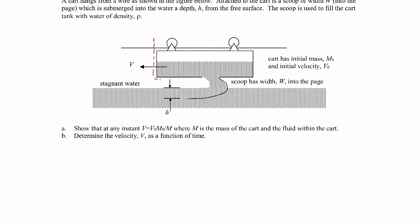I'll draw a control volume that surrounds the cart and cuts across the water coming in through the scoop. The coordinate system I use will be attached to the control volume — we're standing on the cart, moving with it to the left. I'm putting x to the left, the same direction as the velocity.